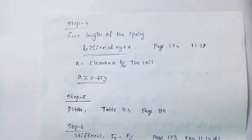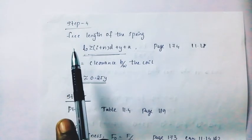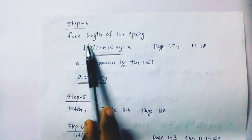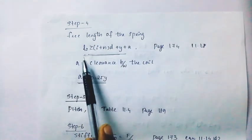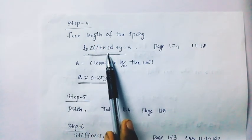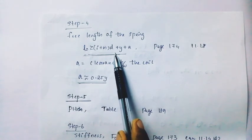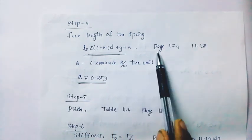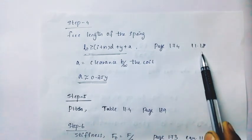Step 4 is the free length of the spring. L0 is greater than i plus n times d plus y plus a. Page 174, equation 11.18.